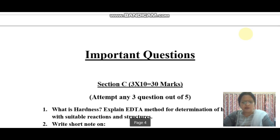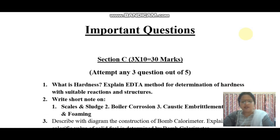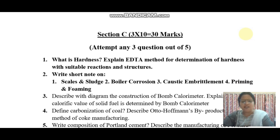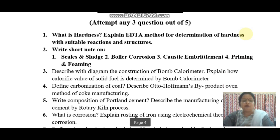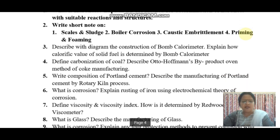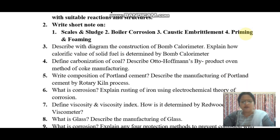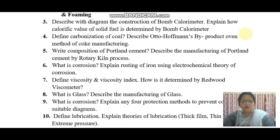For Section C, the important questions are: What is hardness? Explain the EDTA method for determination of hardness with suitable reactions and structures. Write short notes on scales and sludge, boiler corrosion, caustic embrittlement, and foaming. Describe with a diagram the construction of the bomb calorimeter. Explain how the calorific value of solid fuel is determined by bomb calorimeter — this is the most important question. Next, define the carbonization of coal. Describe the Otto-Hoffmann by-product oven process for coke manufacturing — again an important question.